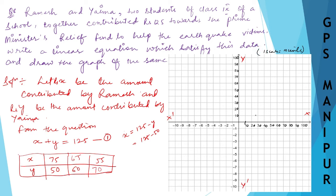x is 75, so 75 maybe here in the middle, and y is 50. So if you take the point here, it will come somewhere here. This point is for 75 and 50.